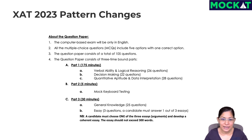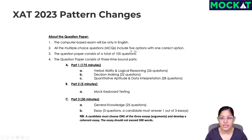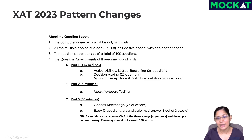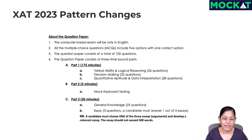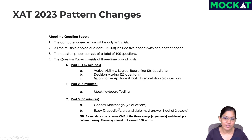Looking at the pattern changes: 105 total questions — that hasn't changed. Five options, one correct option, all MCQs — also the same. The time is what has changed. The number of questions remains the same as last year, so if you've taken mocks, that's sufficient. You're getting 10 extra minutes, and I'll tell you how to use them. Keyboard testing is probably just to ensure everyone's keyboard works and you can type the essay — think of it as a 5-minute break. Then there's part three: 30 minutes for GK and the essay.